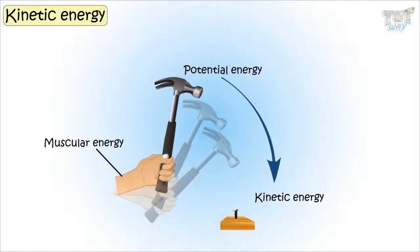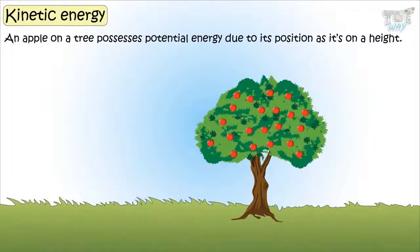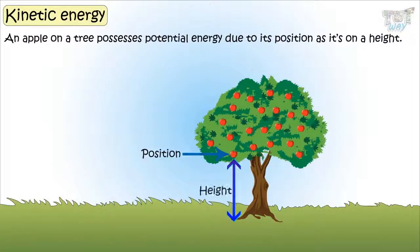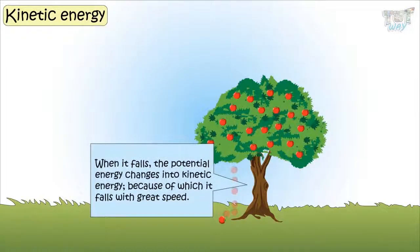Here are some examples where potential energy changes into kinetic energy. An apple, when on a tree, possesses potential energy due to its position as it is at height. And when it falls, this potential energy changes into kinetic energy, because of which it falls with great speed.